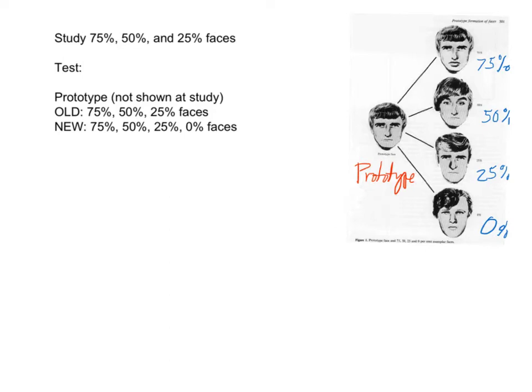At study, subjects were presented with faces one at a time. The faces could be either 75%, 50%, or 25% similar distortions of the prototype. Note that the prototype was never shown during study.